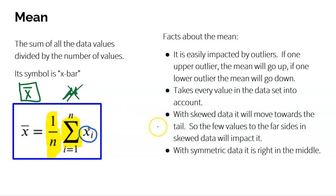A couple of facts about the mean: the mean takes every single value into account, so it's easily impacted by outliers. If there's one really big upper outlier, the mean has to use it when it calculates itself, so it's typically going to be a little bit higher — it's going to move towards that outlier. Or if there's one really low outlier, the mean has to take that value into account, so it will move towards it. The mean is like trying to be fair — every value matters equally, so it tends to go where the majority of the data is.